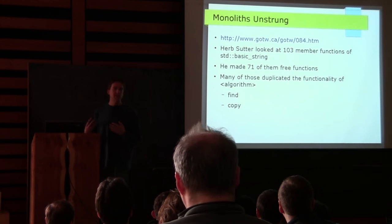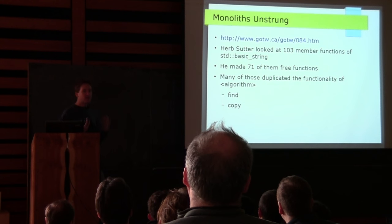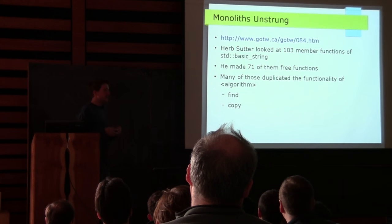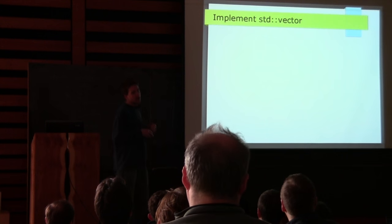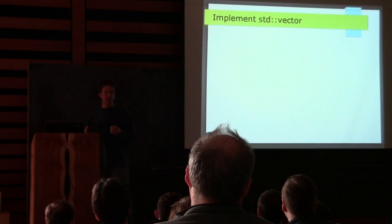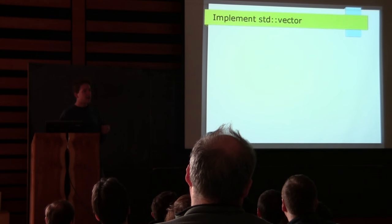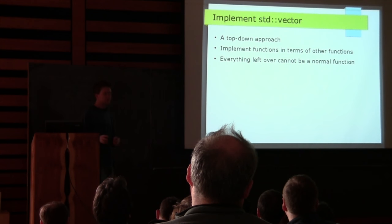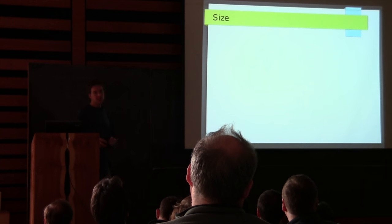For my presentation, I'd like to do a similar exercise. But instead of going over std::basic_string, I'm going to use a class that is most people's favorite class in the standard library: std::vector. We're going to implement most of std::vector right here and see exactly how much of its implementation details we need to care about, and how much we can do using just its public interface. We're going to take a top-down approach, implement functions in terms of other functions, and everything left over can just be a normal function.